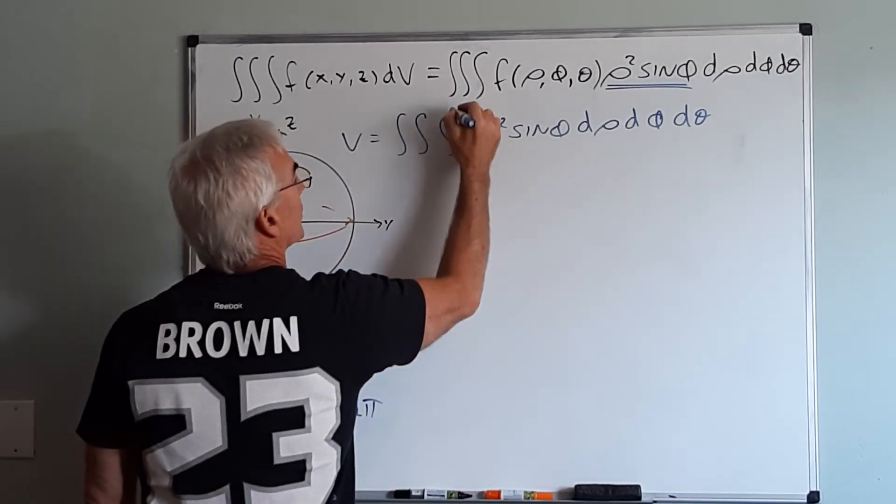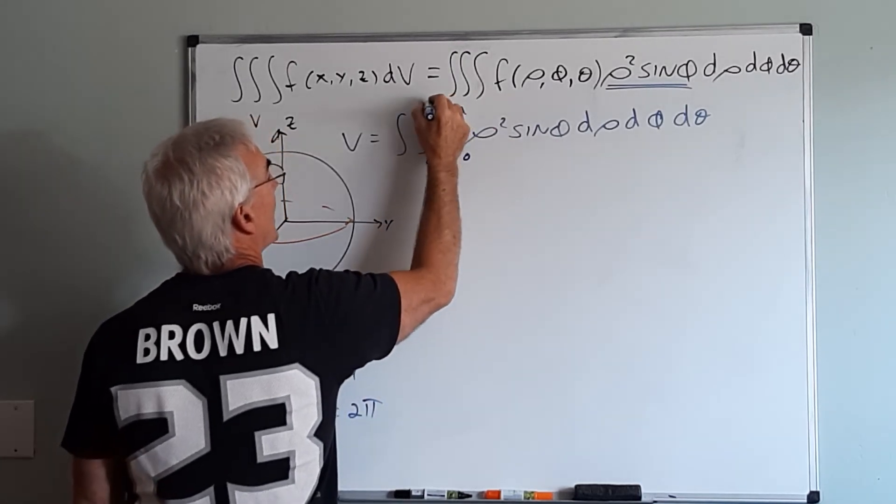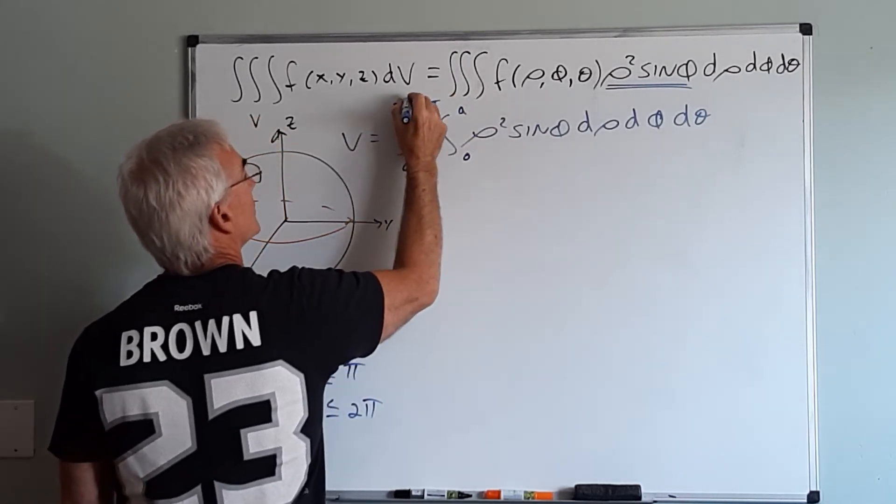So here I'll go from 0 to A, here I'll go from 0 to pi, here I'll go from 0 to 2 pi.